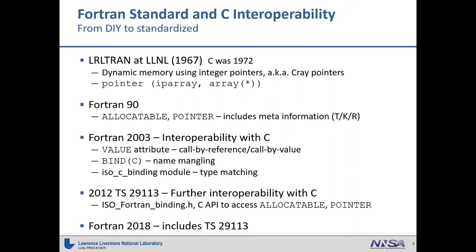Fortran 2003 introduced interoperability with C features and addressed the main do-it-yourself features people had to deal with before. It added the value attribute to deal with call-by-reference versus call-by-value differences between Fortran and C, introduced bind(C) which dealt with name mangling — whether or not your Fortran compiler added an underscore or made names uppercase — and added the ISO C bindings module so that types in C could match types in Fortran. This really helped with things like ints and longs which aren't necessarily standardized in size.